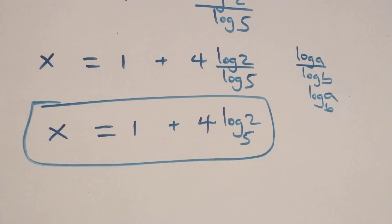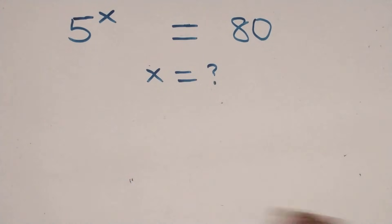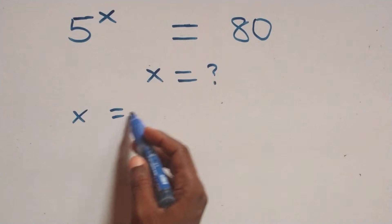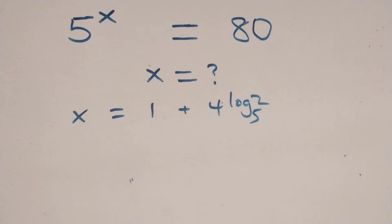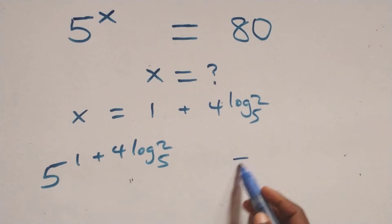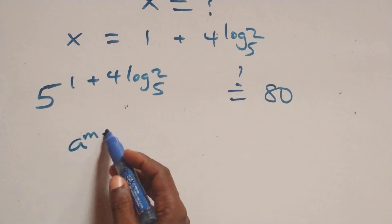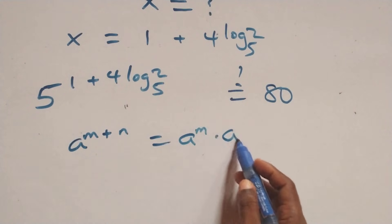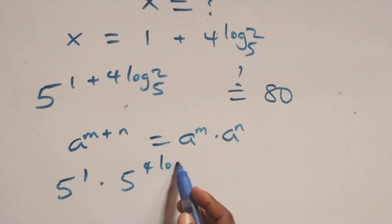Let's check if this satisfies the given problem. We substitute the value of x, which is x equals to 1 plus 4 log 2 base 5. That is what we have here: 5 raised to power 1 plus 4 log 2 base 5 equals to 80 on this side. We apply the law of indices: a raised to power m plus n is the same thing as a raised to power m times a raised to power n. Then here we have 5 raised to power 1 times 5 raised to power 4 log 2 base 5, and this equals to 80 on this side.